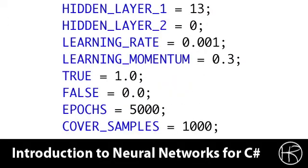I created a configuration class that contains several constants that the program needs to determine its operation. This allowed me to quickly change these options and try out various scenarios to figure out which numbers would give me the best results. The hidden layers 1 and 2 define how many neurons are in each hidden layer. I specified 0 for hidden layer 2, and therefore do not have a second hidden layer — this neural network is operating on a single hidden layer. I used a learning rate of one one-hundredth of a percent, and a momentum of 30 percent, which seemed to eliminate problems with local minima.